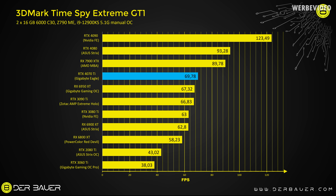As usual for a first estimate, we're looking at 3DMark TimeSpy Extreme GT1, which is GPU-bound and not CPU-bound. The 4070 Ti scores about 70 fps, slightly beating the 3090 Ti and the RX 6950 XT. TimeSpy Extreme GT1 uses 4K resolution but doesn't use that much memory, which is why we probably see these results.